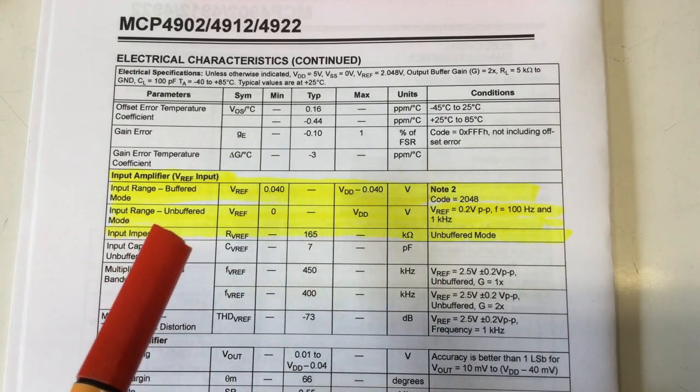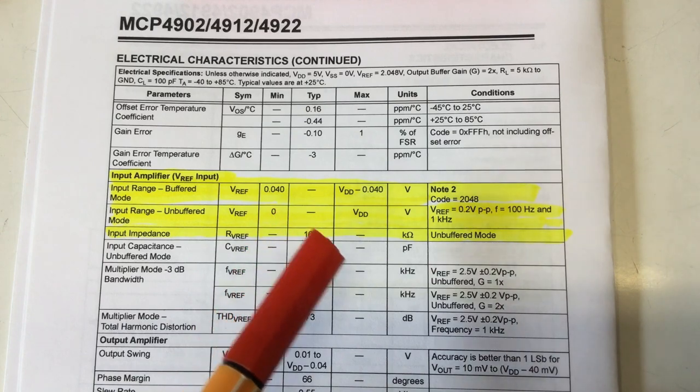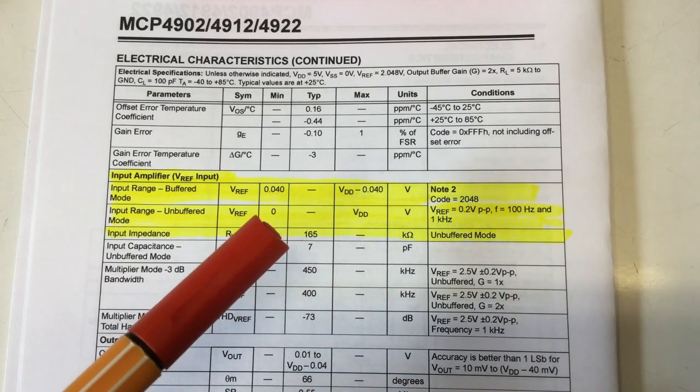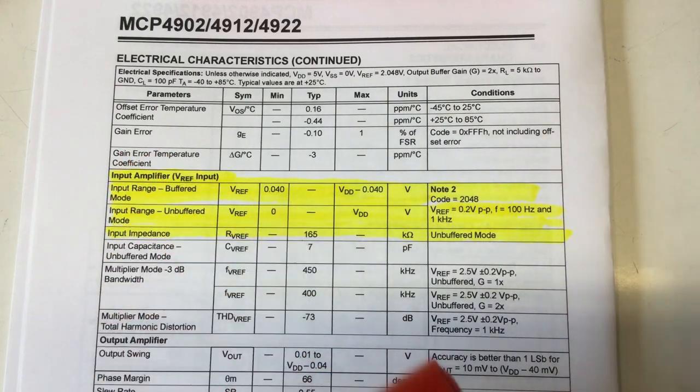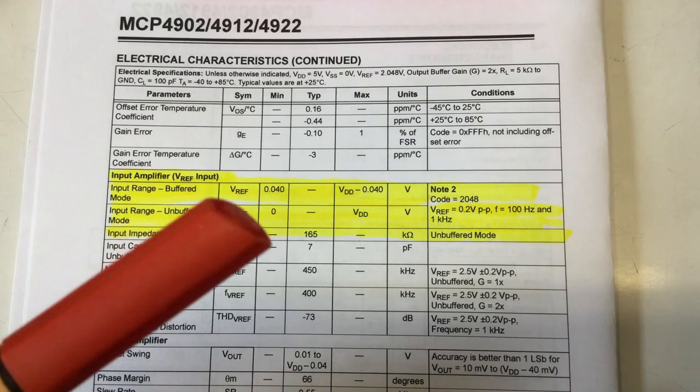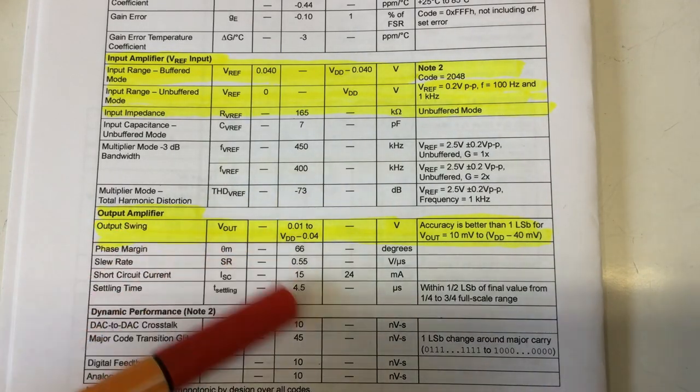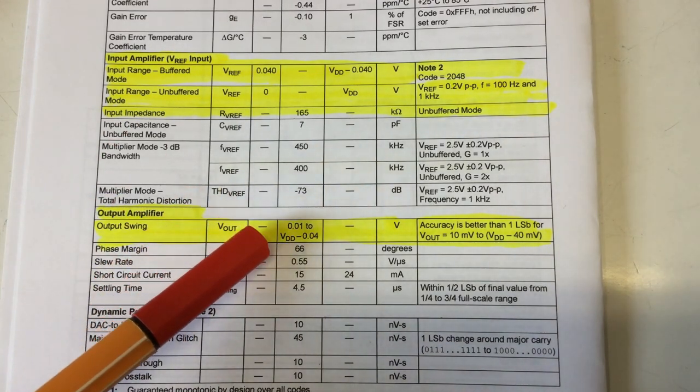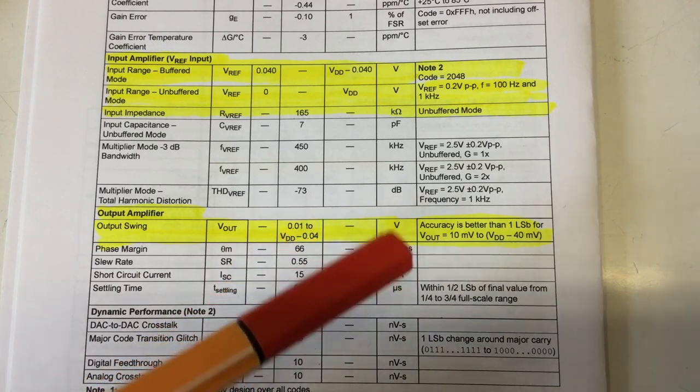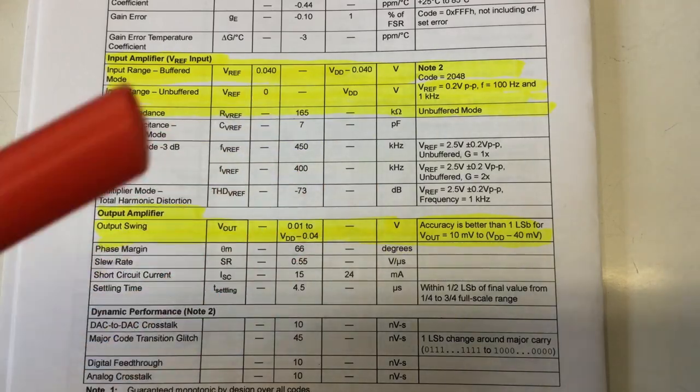Also note the input impedance if using unbuffered mode is only 165 kilo ohms. Interestingly, they don't give you a value for the input impedance in buffered mode. They just write later on, it's very high. Output swing is like for the 4822 and any other DAC in that family between 0.01 and VDD minus 0.04 volts. So supplying a reference voltage at exactly VDD really doesn't make sense.